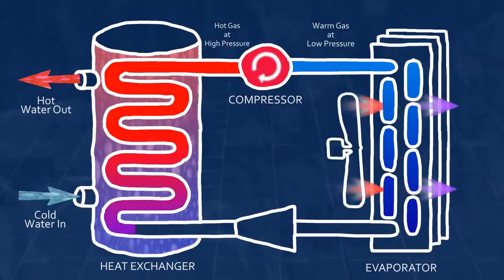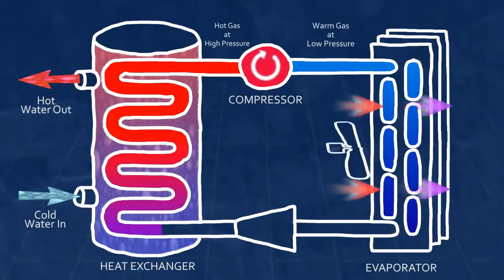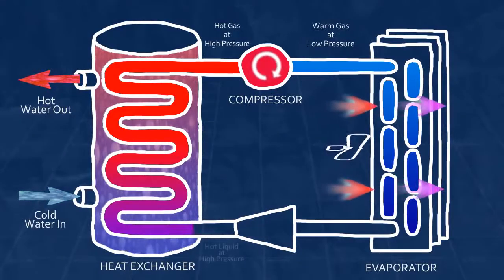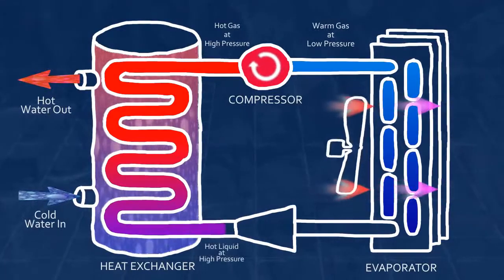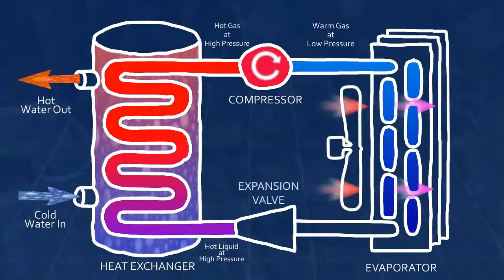Finally, the now cooler high pressure liquid refrigerant passes through an expansion valve. As the refrigerant passes through the valve, its pressure and temperature are greatly reduced.